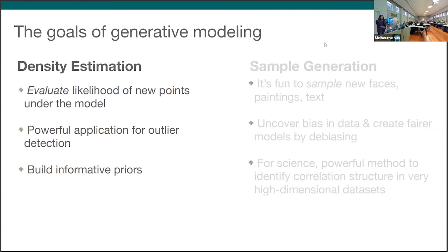Now that we know what a generative model is, it's important to think about what are the goals of generative modeling. There are two main goals of generative modeling. One of them is density estimation. So once we have learned the PDF of the data that we're interested in, we can use this PDF to evaluate the likelihood over new points under this data. You can already have an intuition of why this is very important, because this is a very powerful application for outlier detection, especially in very high dimensional systems that are hard to have a physical understanding of. And it's also very important to build informative priors that we can then put down further in the chain, for example, in Bayesian analysis.